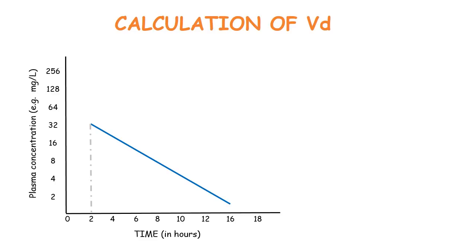Considering volume of distribution is the volume of fluid in the body that accommodates the whole amount of the drug, we need to find out the plasma concentration of the drug at the time zero, where there was no loss in drug quantity due to elimination.